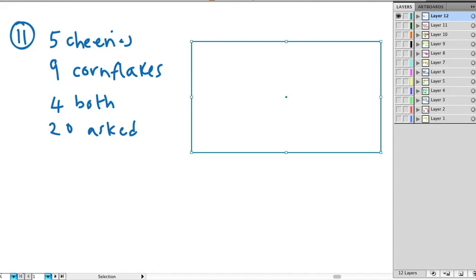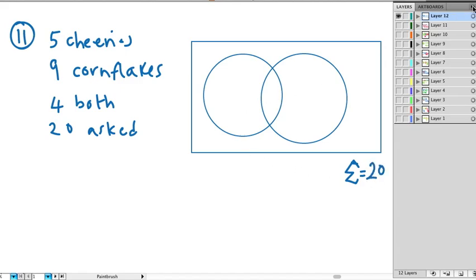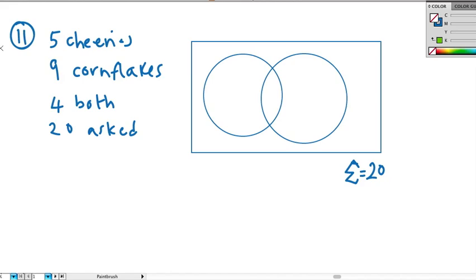So a Venn diagram, in seventh grade anyways, has a universe, which is the big rectangle. And it also has two circles, which overlap. So this is a Venn diagram. The first thing we should do is we should put our Sigma. Sigma is this Greek letter and it stands for sum of. So really, the sum of the people asked should be 20. So we should label that on our Venn diagram, 20. Let me put it in the right place. So we should put the Sigma over here. Sigma equals 20 people.